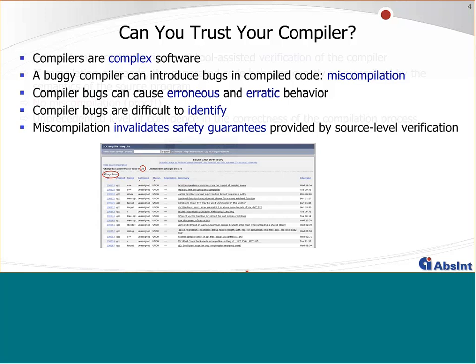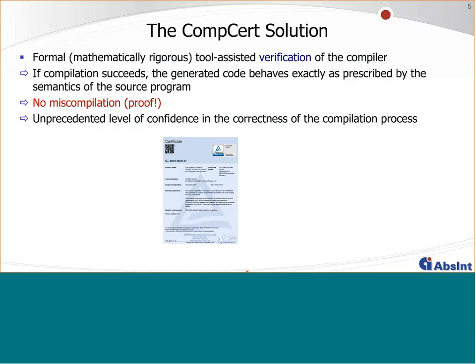CompCert takes a different approach: it performs a formal, mathematically rigorous proof of the correctness of the compiler itself. If compilation succeeds, there is a proof that the generated code behaves exactly as the semantics of the source program indicate it should behave — meaning no miscompilation. This provides a level of confidence in the correctness of the compilation process that just hasn't been possible before. CompCert is in use today — for example, in the development of safety-critical nuclear power software.